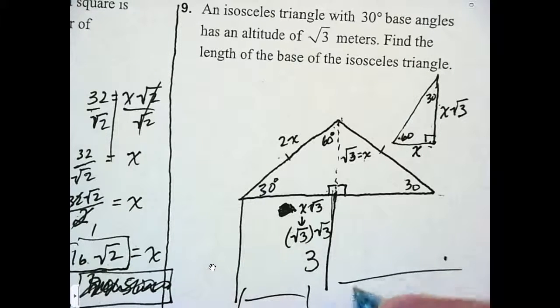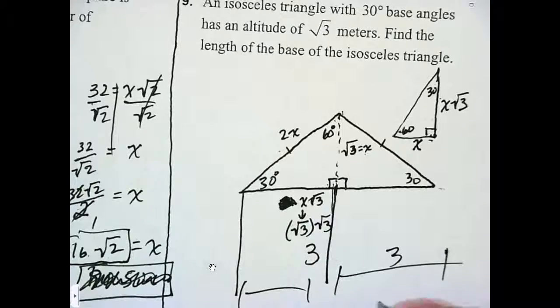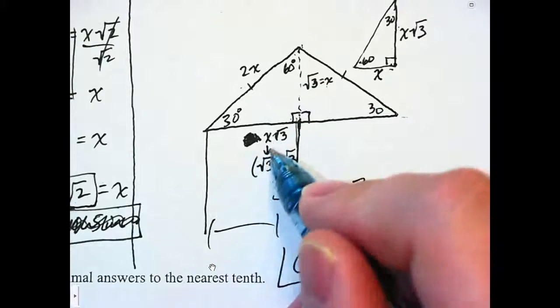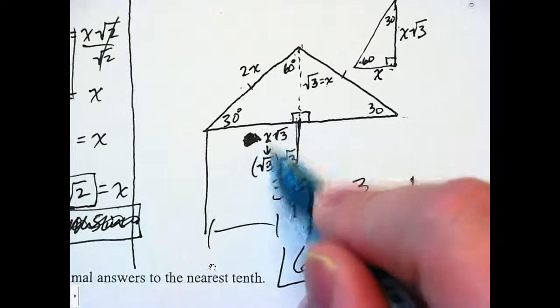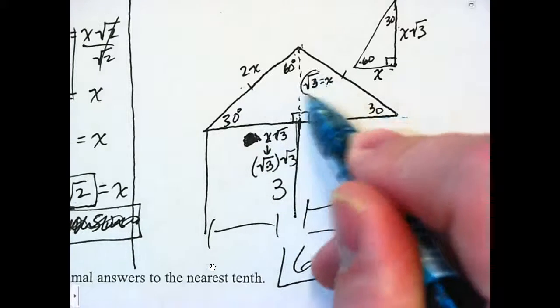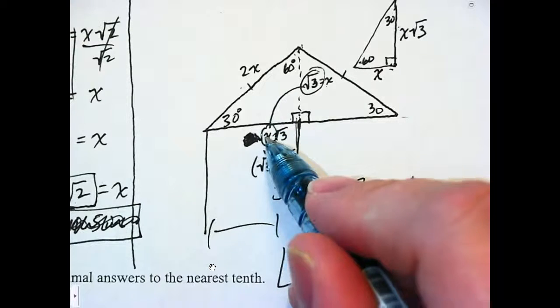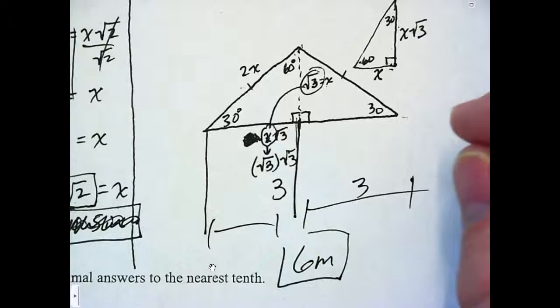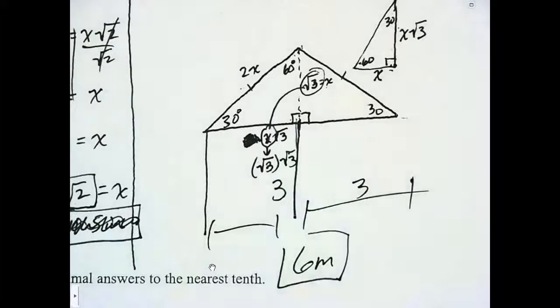So this is also 3. 3 and 3 is 6. 6 meters. How many got it? How many know what they did wrong? All right. Questions? Brennan? So I just put in where x is, I put in the root 3. So the question is, how do I plug in the root 3 for the x? So I just took this root 3 and substituted it in right there. So I have root 3, root 3. Last one. Number 10.